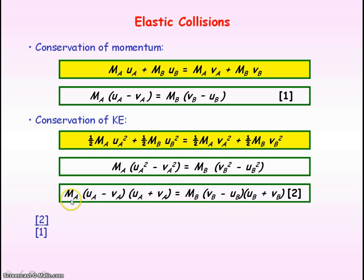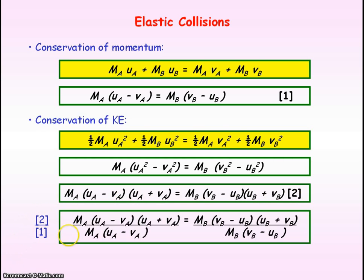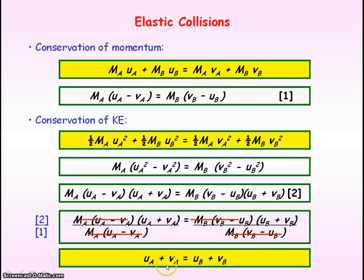Dividing equation two by equation one, on the left we have the A terms of equation two divided by those of equation one, and on the right the B terms of equation two divided by those of equation one. The factor mA(uA − vA) cancels from top and bottom, as does mB(vB − uB). What remains is: uA + vA = uB + vB for an elastic collision. So the sum of velocities of A equals the sum of velocities of B.